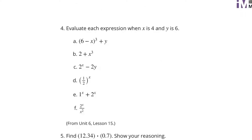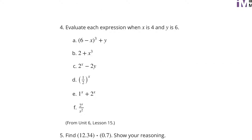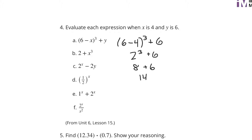Now evaluate each expression when x is 4 and y is 6. For A: (6 minus 4) to the third power plus y equals 6. Solve inside the parentheses first — you get 2 to the third plus 6. Take care of the exponent: 2 to the third is 2 times 2 times 2, which is 8. Plus 6 is 14. So A is 14.